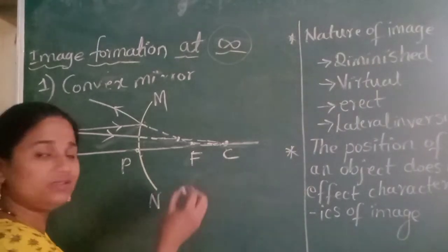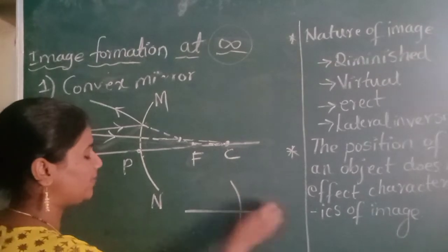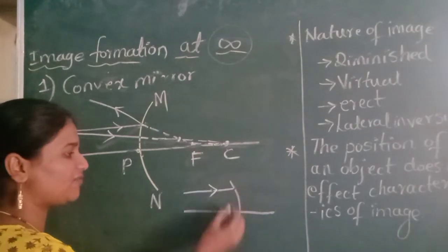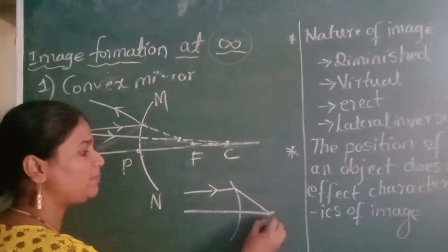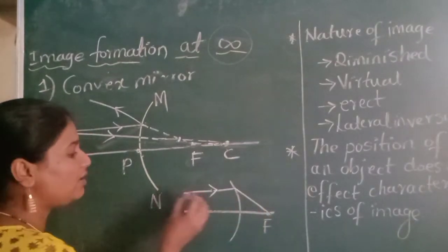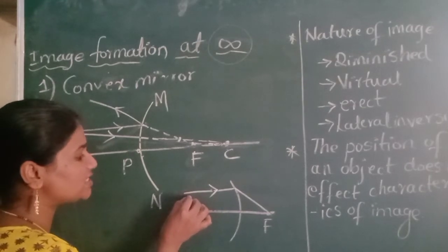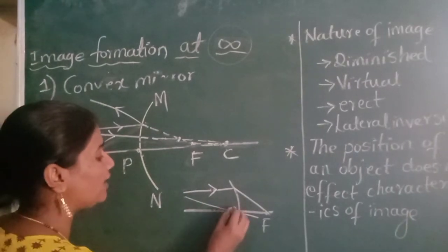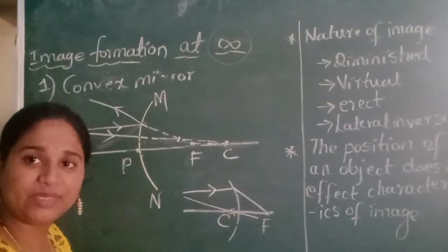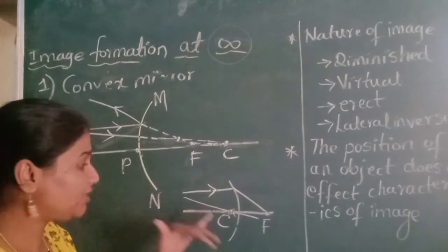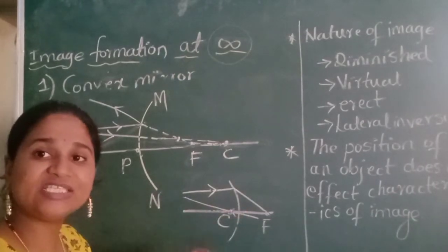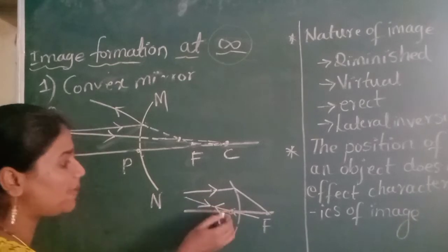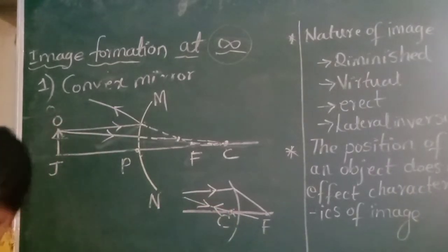Let me brush up on things from the last class. When a parallel beam of light is focused on the spherical surface of a concave mirror, the image will be formed on the principal focus. And when the ray of light passes through the center of curvature, there will be no angle of incidence and no angle of reflection, because it is incident normally and perpendicular to the surface. That is why the angle of incidence and angle of reflection will be zero, and the reflected ray will be in the same path as the incident ray.